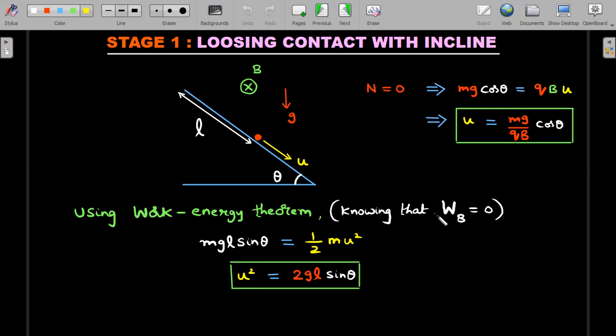Using work-energy theorem, as it slides through distance l, only the work-doing force is the gravitational field because magnetic force and normal reaction will not do any work. So mg l sin theta, work done by gravity, should be increase in kinetic energy, half mu squared.